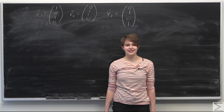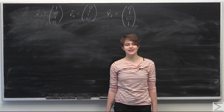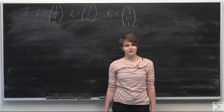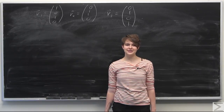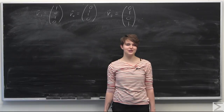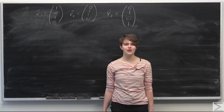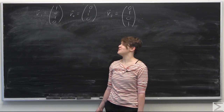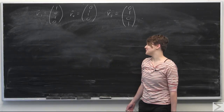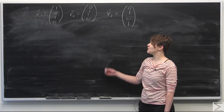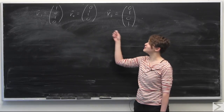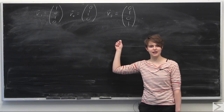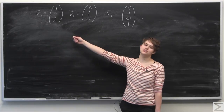Welcome to the Worldwide Center of Mathematics. Today I'll be going over this week's Advanced Knowledge Problem of the Week. With the full problem and solution transcript, you can see the link in the description of this video on our YouTube channel. This week's Advanced Knowledge Problem of the Week asks you to find an orthonormal basis for the vector space spanned by the following given three vectors.